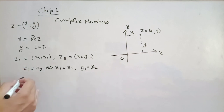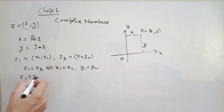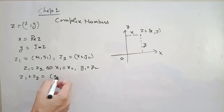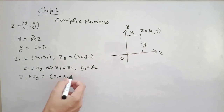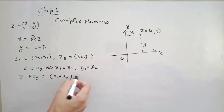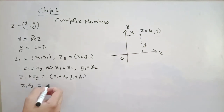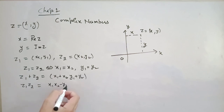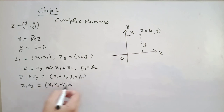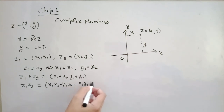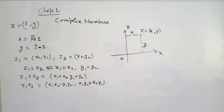Next, how do we add two complex numbers? The addition of z₁ and z₂ is defined as (x₁ + x₂, y₁ + y₂). This is the definition of addition. The product is defined as (x₁x₂ − y₁y₂, x₁y₂ + x₂y₁). This is the definition of the product of two complex numbers.